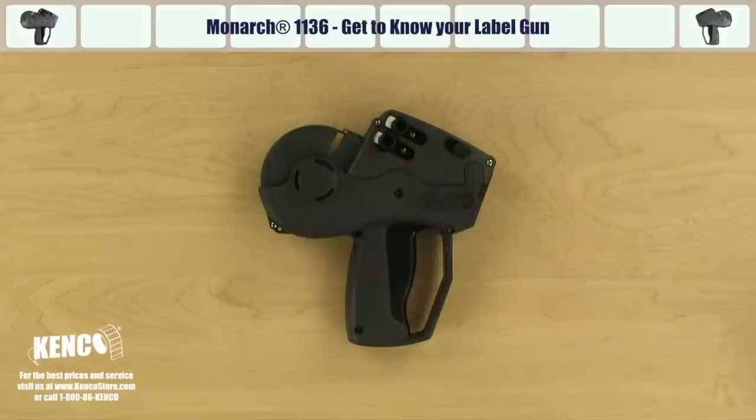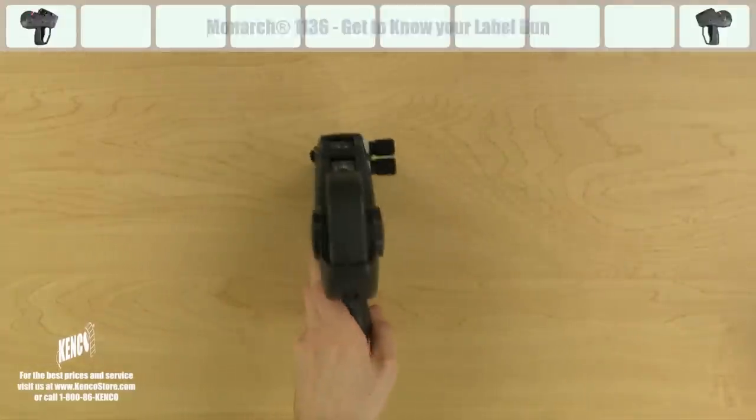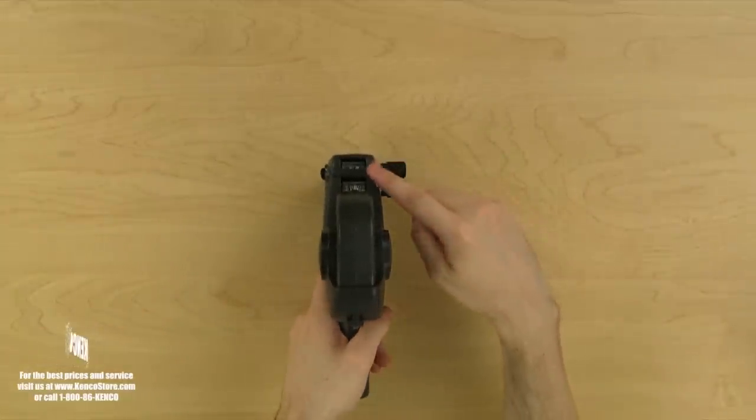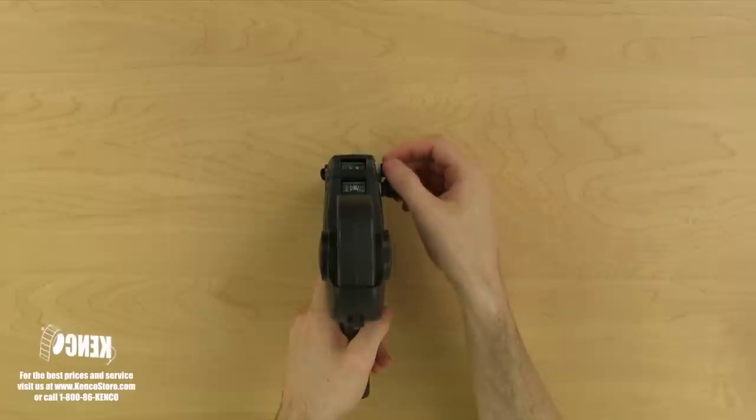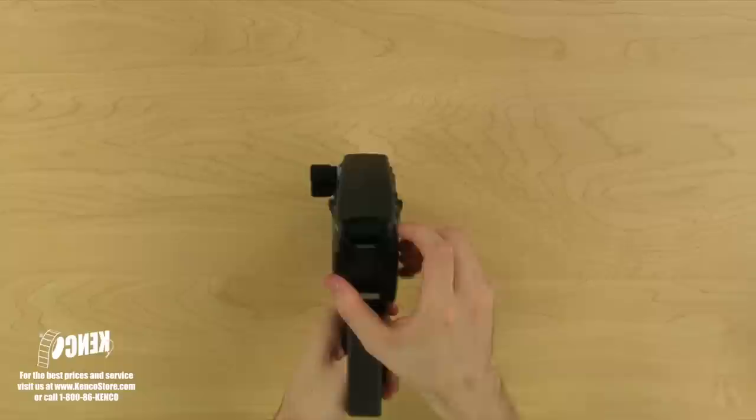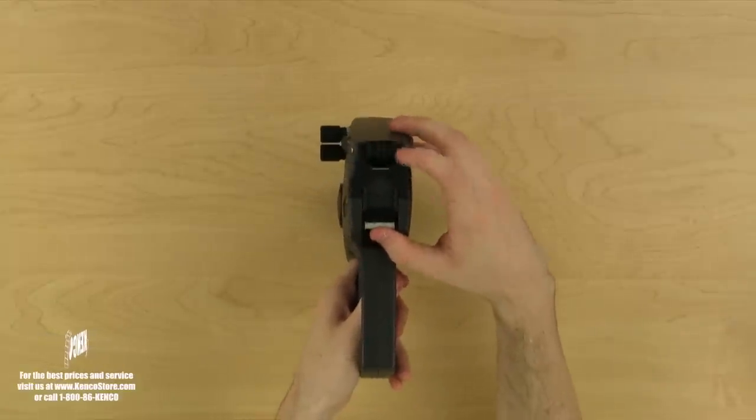Let's pick up the gun with our left hand and take a look at the top. Right away, you will notice the print head and the adjustment dials. Let's turn the gun towards us and look at the front. On the top, you will see the nip rollers. These will help apply the label to your product.